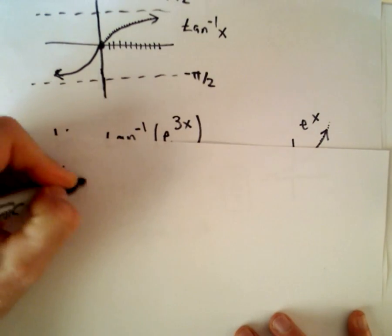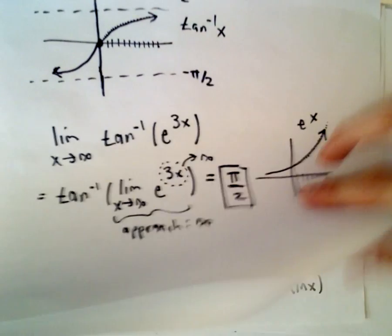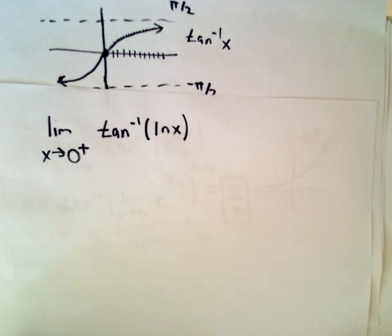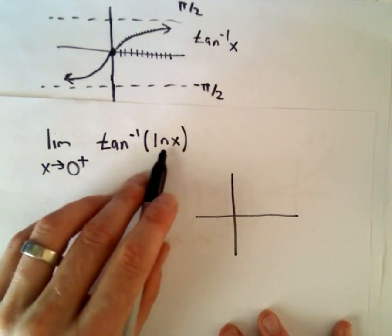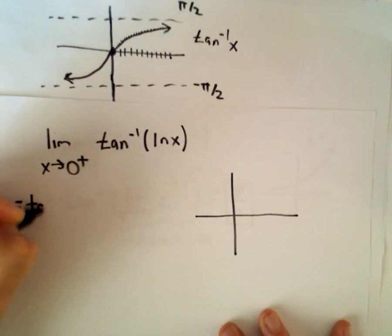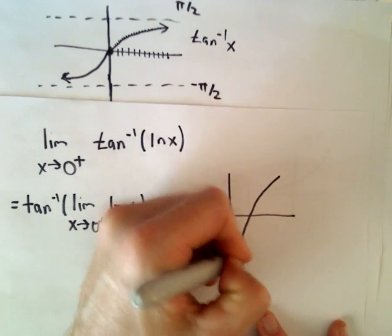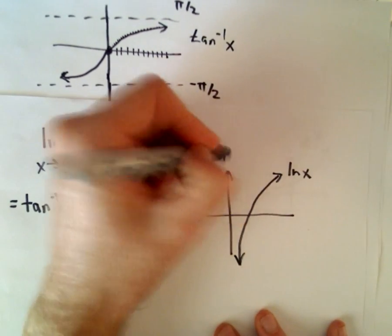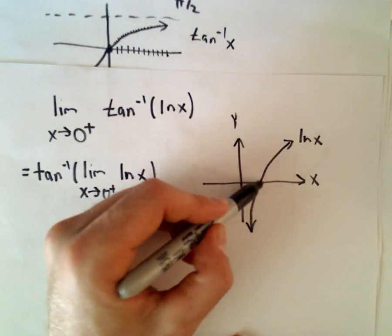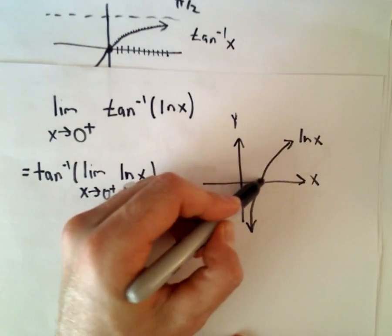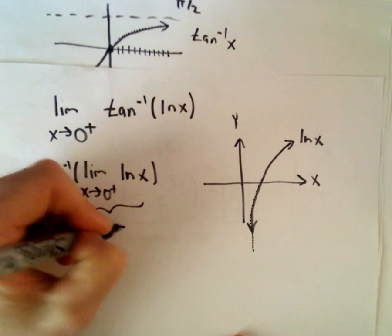The last example: the limit as x approaches 0 from the right of inverse tangent of the natural logarithm of x. Thinking about the graph of ln x: as x approaches 0 from the right, the y values on the natural logarithm function become more and more negative. So this inner limit approaches negative infinity — the values are going to negative 10, negative a million, negative a billion.